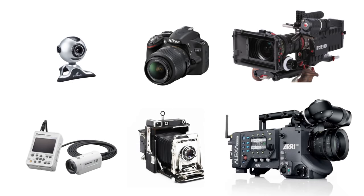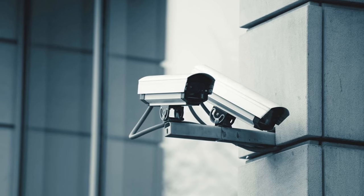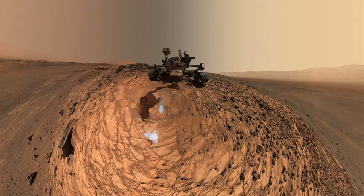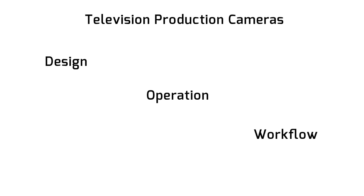Cameras come in all shapes and sizes, and their design, function and required capabilities depend on their application. They range from the cameras we keep in our pockets, to the closed-circuit surveillance cameras on our streets, and even the ones we send into outer space. This video will be focusing on the types of cameras used in television productions, looking at how and why they've been designed in a certain way, how they operate, and the part they play in the overall production workflow.